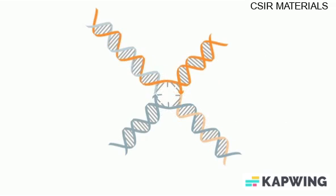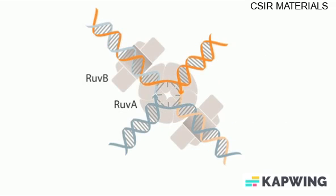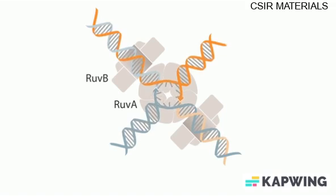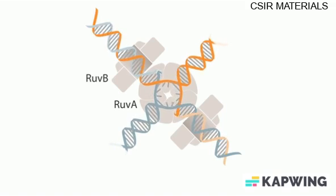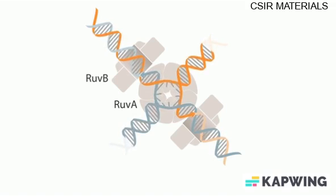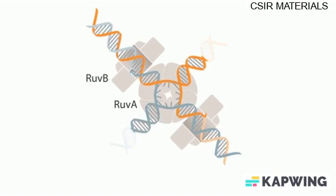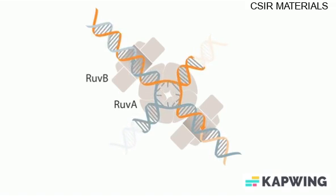Branch migration is catalyzed by two proteins, RavA and RavB. A tetramer of RavA binds directly to the Holliday structure, forming a core to which two RavB rings attach, one on either side of the junction. The RavAB complex is thought to act as a molecular motor, rotating the helices so that the branch point moves.